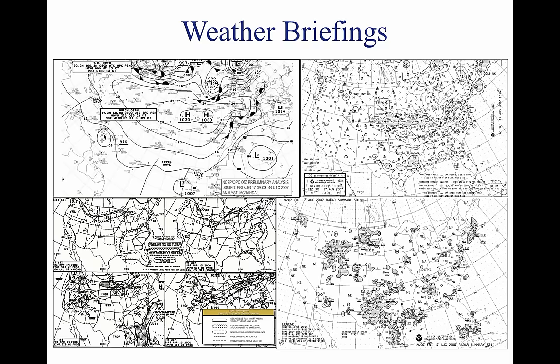10. Other information — at the end of the standard briefing, the FSS specialist provides radio frequencies needed to open a flight plan and to contact EFAS. An abbreviated briefing is a shortened version of the standard briefing. It should be requested when a departure has been delayed or when weather information is needed to update the previous briefing. An outlook briefing should be requested when a planned departure is six hours or more away. It provides initial forecast information limited in scope due to the timeframe and is a good source of flight planning information that can influence decisions regarding route of flight, altitude, and ultimately the go/no-go decision.